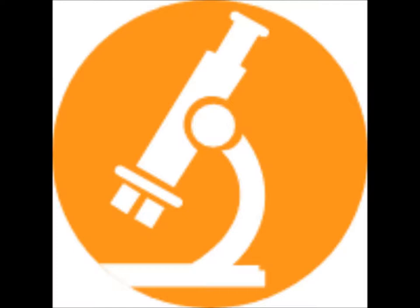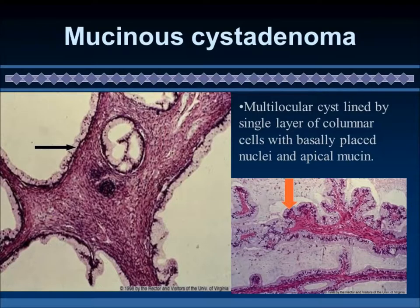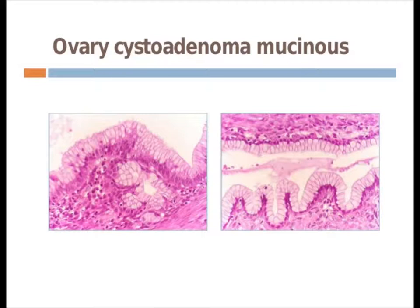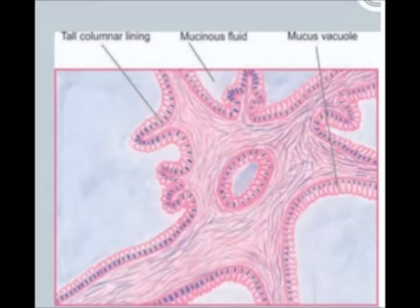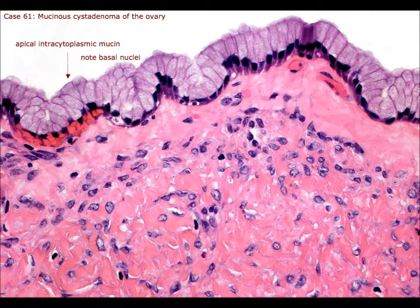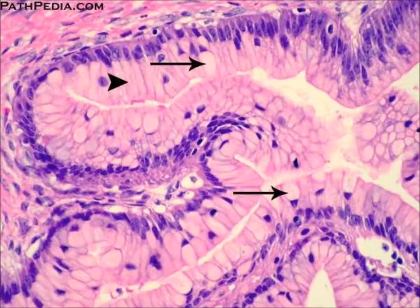Now we will see the microscopic appearance of mucinous cyst adenoma. You can see here there is a mucinous tall columnar epithelium. There is basal nuclei and bluish mucinous material nicely placed at the apices of the cells. Here there is the torque luminal lining, mucinous fluid, and mucin vacuoles in the epithelial cells. There is apical intracytoplasmic mucin and basal nuclei. Because the cyst is multilocular, you can see the mucinous epithelium on both sides.